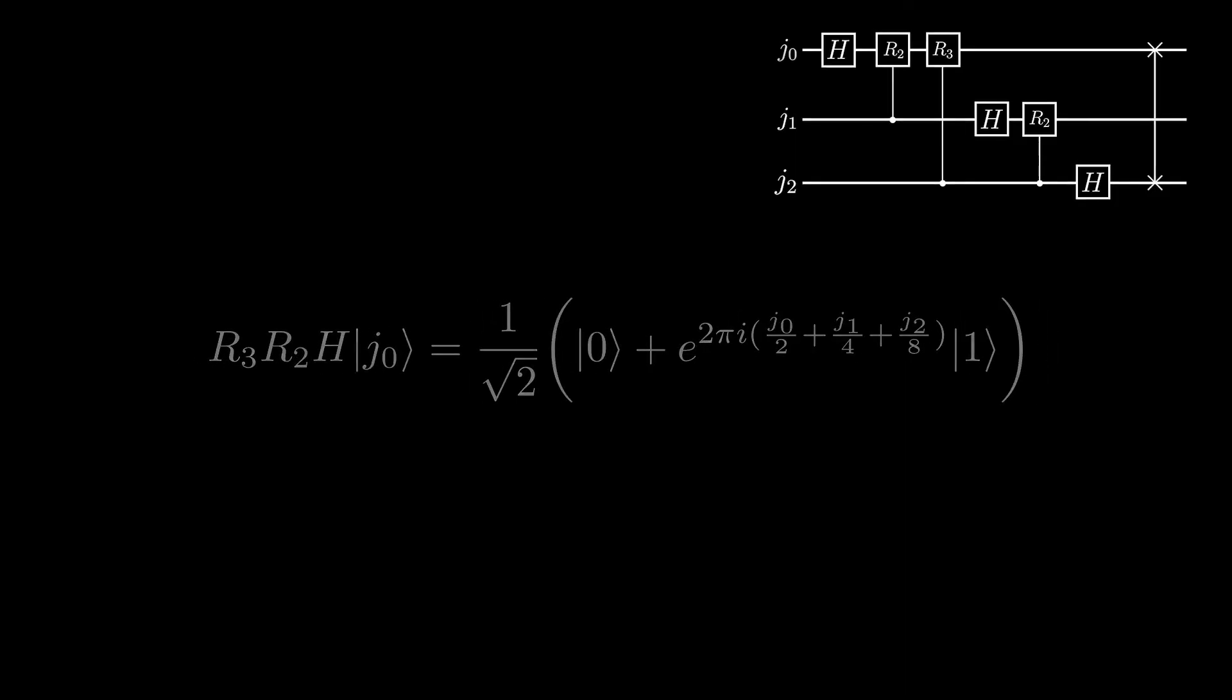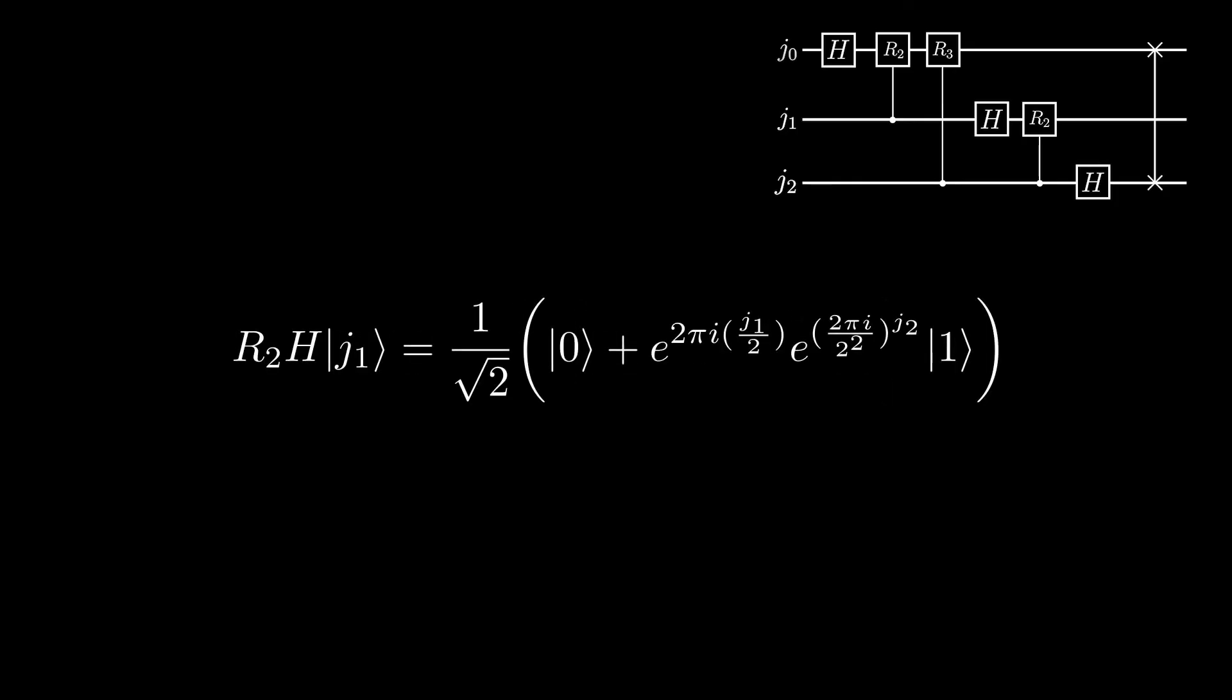Now let's find out what j1 becomes. After the Hadamard gate, the state becomes this state. Then after the controlled r2 gate, and simplifying like we did previously, we get this state.